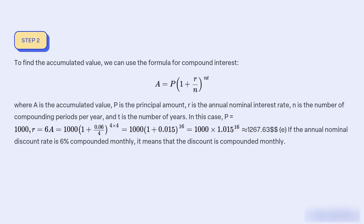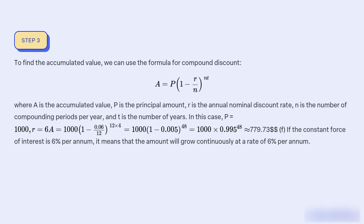If the annual nominal discount rate is 6% compounded monthly, it means that the discount is compounded monthly. To find the accumulated value, we can use the formula for compound discount: A = P(1 − d/n)^(−n×t), where A is the accumulated value, P is the principal amount, d is the annual nominal discount rate, n is the number of compounding periods per year, and t is the number of years. In this case, P = 1,000, d = 6%, n = 12 (monthly compounding), and t = 4. Plugging in these values, we get A = 1,000 × (1 − 0.06/12)^(−12×4) = 1,000 × (0.995)^(−48) ≈ $1,270.24.